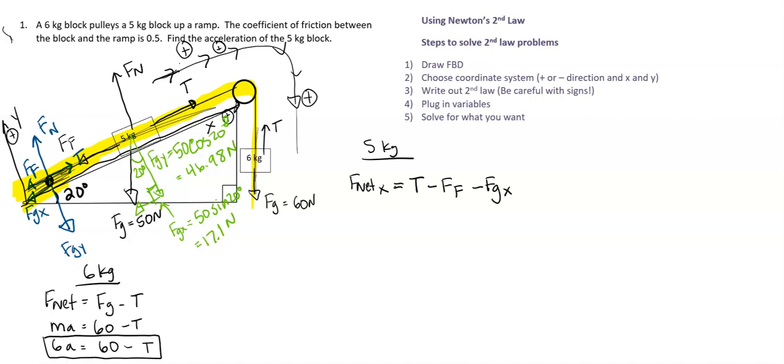go on to step number four, plug in the variables. I already did that for the 6 kilogram. So F net, we know it's MA, tension, we don't know what that is, minus FF,